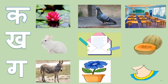K — K say kamal. Kamal means lotus. K say kabootar. Kabootar is pigeon. K say kakshah, which means class. Next letter is kh. K say kargosh. Kargosh means rabbit. K say khat. Khat means letter. K say karbuja. Karbuja is muskmelon.